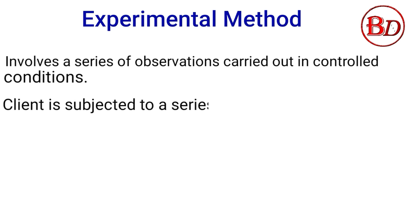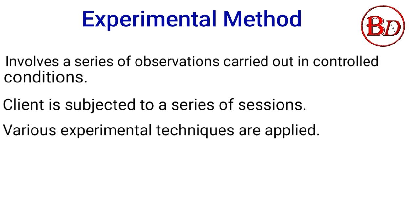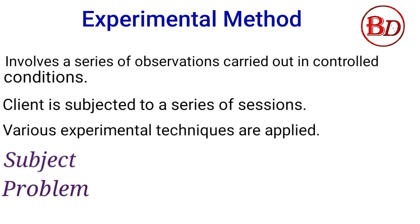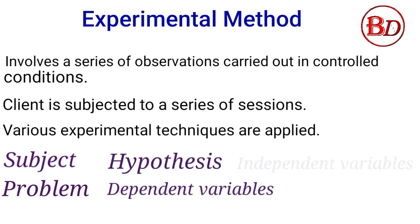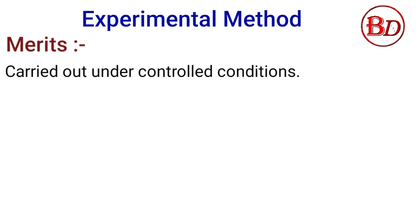Experimental method: This method of psychology involves a series of observations carried out under controlled conditions. The client is subjected to a series of sessions in which various experimental techniques are applied by the psychologist. The main components are: subject, problem, hypothesis, dependent variables, and independent variables. It is carried out under controlled conditions, and the various variables are determined by the psychologist in the initial stage.